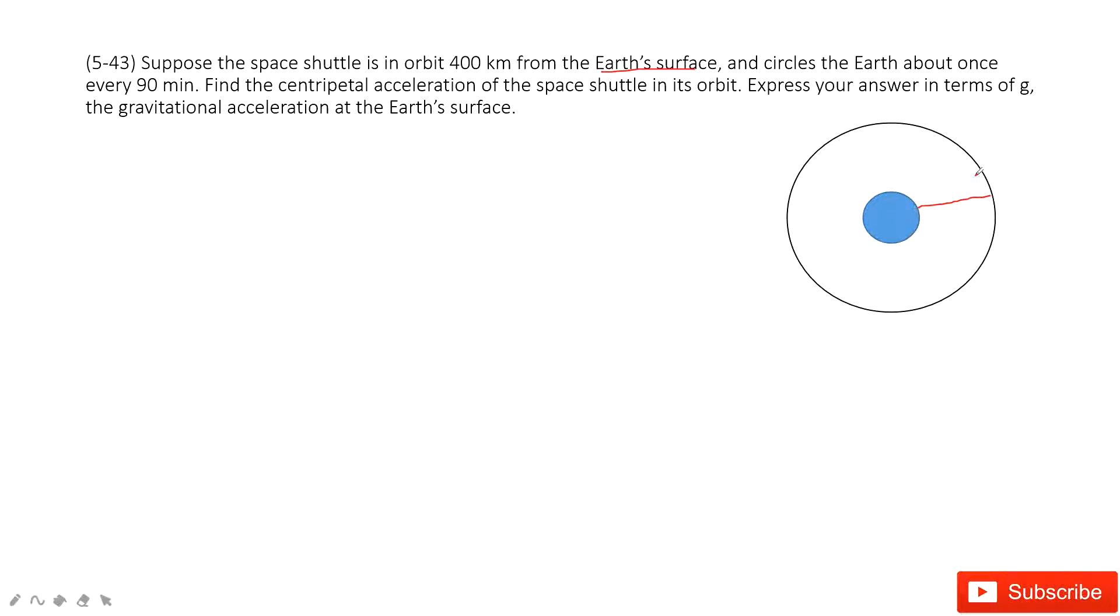So if we consider this shuttle do the circle motion, we need to consider the center of the earth, right? The radius should be this one. Do you agree? So it should be the radius for the earth plus the distance, 400 kilometers. So this is the point we need to take care.